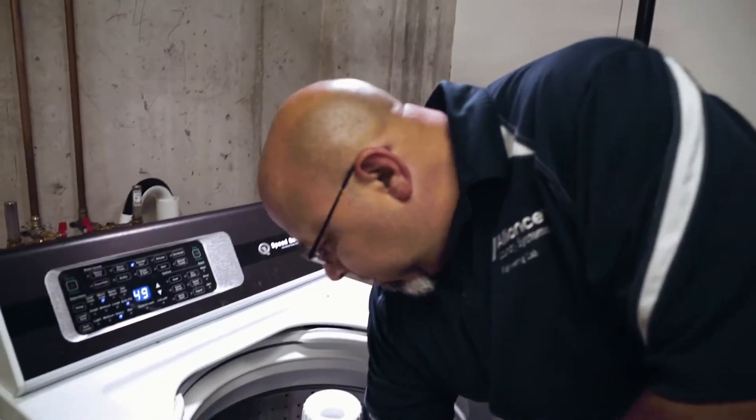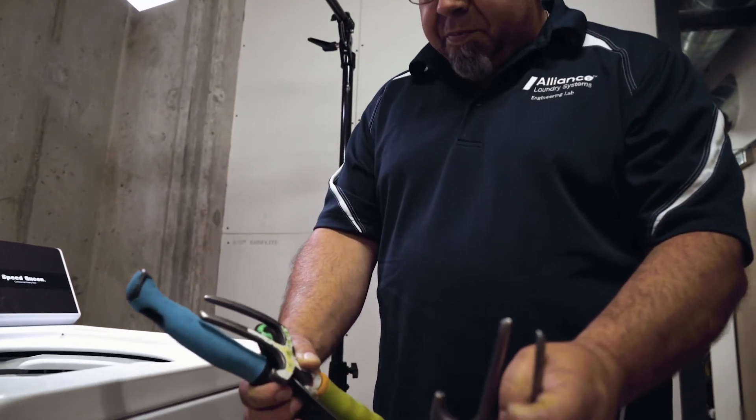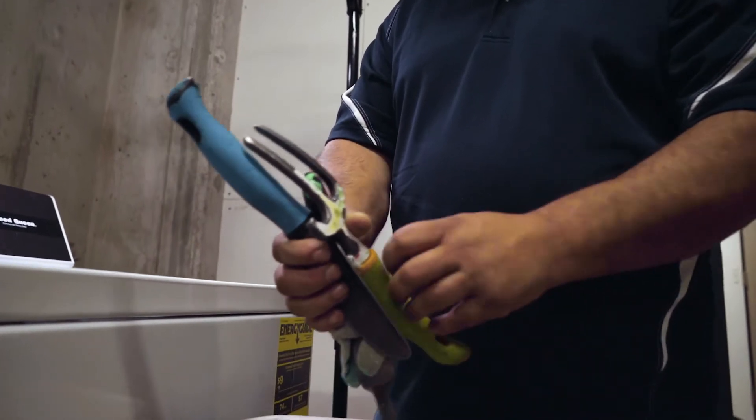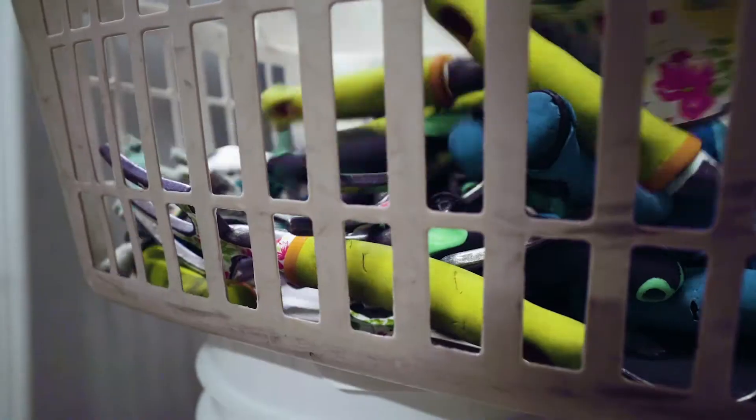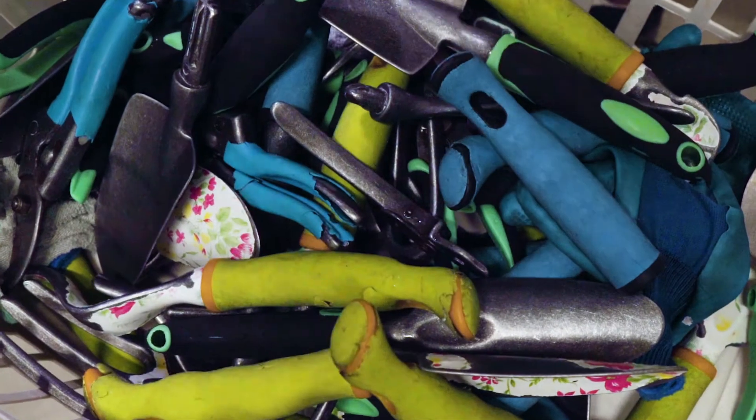So here's our tools that we've been washing for the last month. We have broken pieces here. That's what our shears look like after the end of a month of washing.